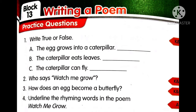Now coming to the third one: how does an egg become a butterfly? There is a process where the egg becomes a butterfly. You can draw it or write in sentences. Write the stages from where the egg is changing into a butterfly — you will get four steps, so you can number them one, two, three, four. Otherwise, you can draw a picture, put arrows, and send it.